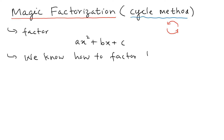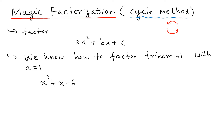We know how to factor trinomials with a equal to 1. For example, let's say we have x squared plus x minus 6. What we're going to do is think of two factors of negative 6 that add up to the coefficient of x, which in this case is 1.